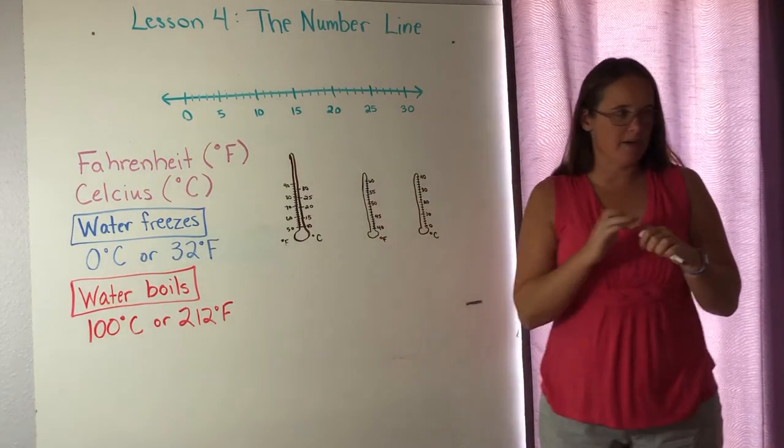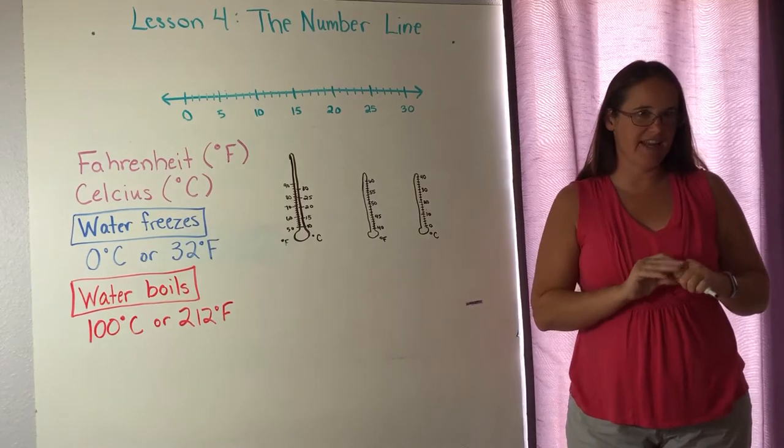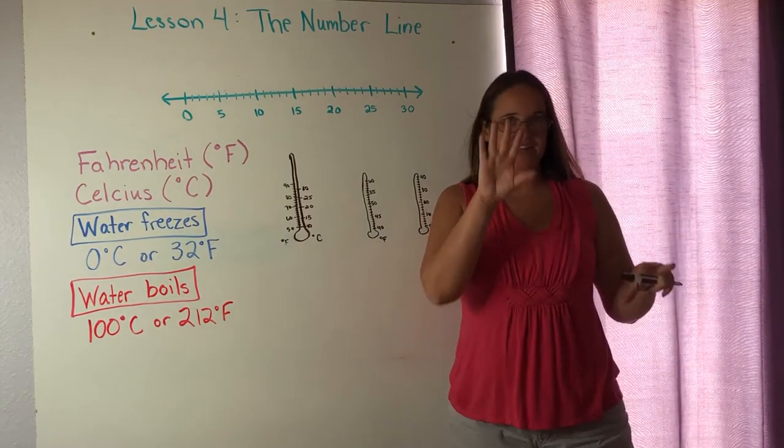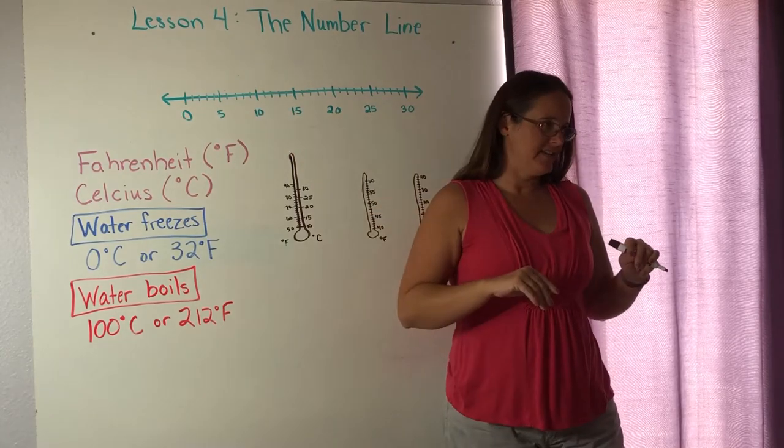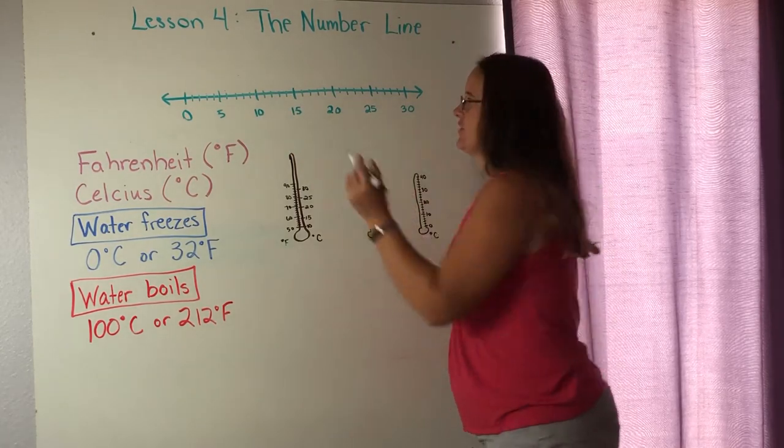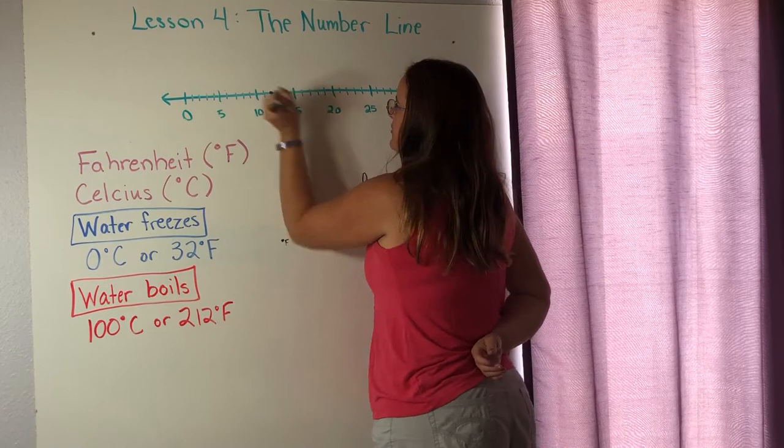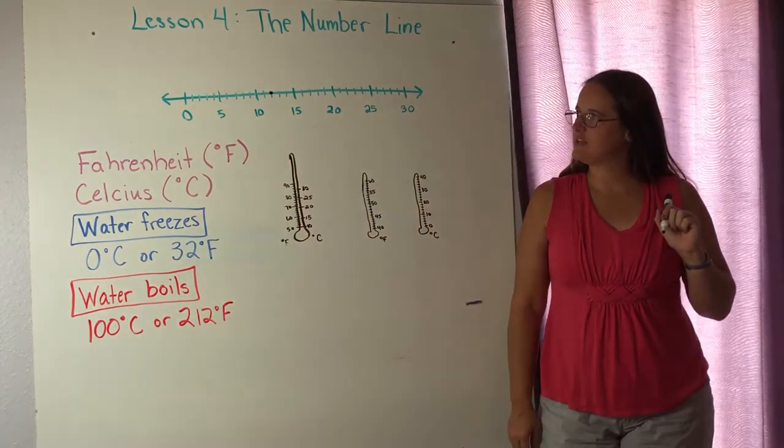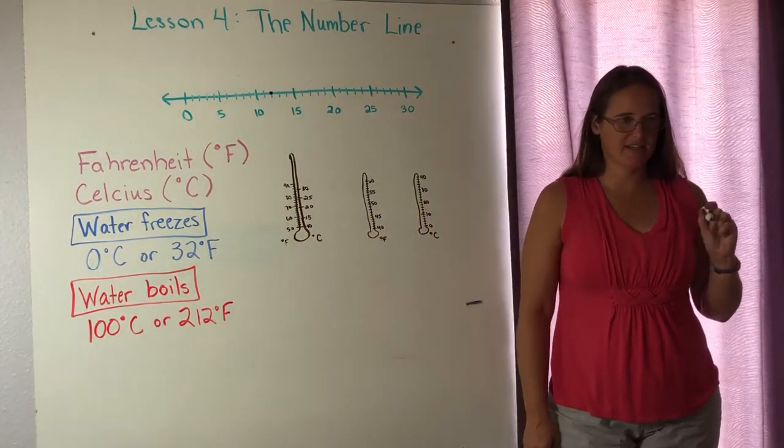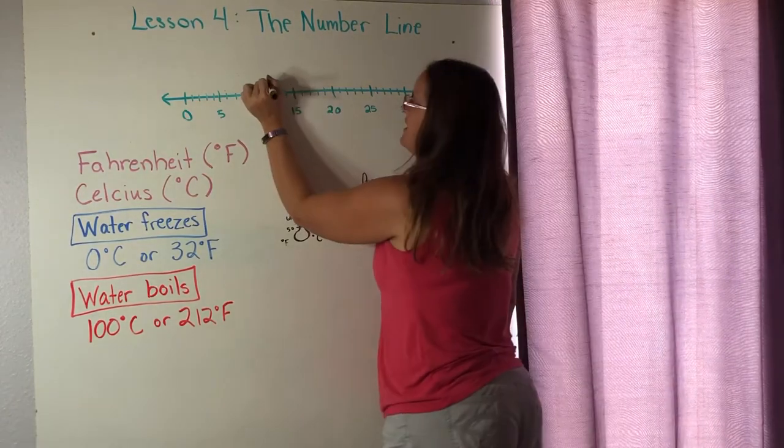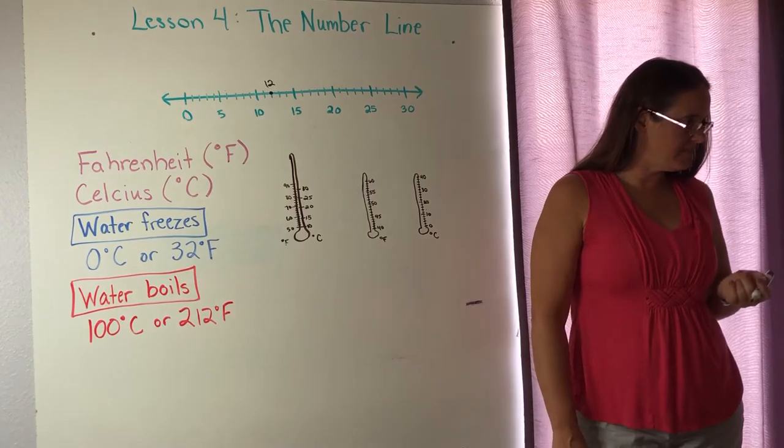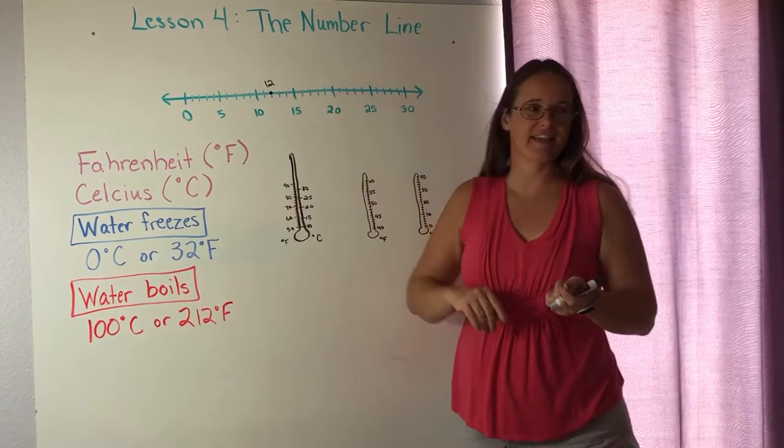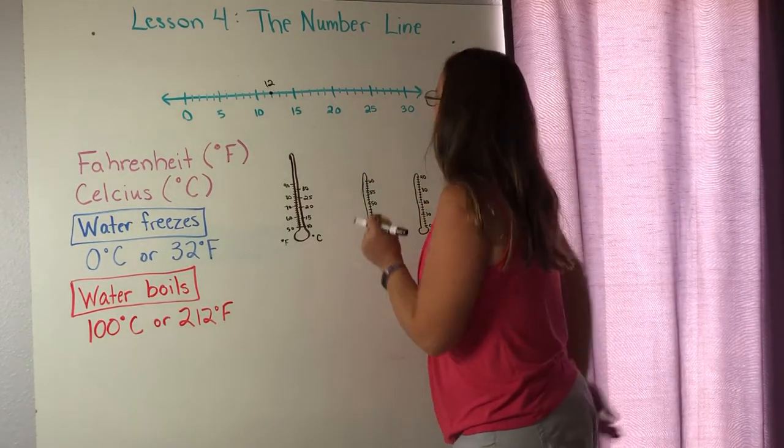And we're just going to use my accurate number line here and we're going to practice. I'm going to put a point up on this number line and I want my boys here and you guys at home to tell me what number does that point represent. So if I put a point right there. Riker, can you tell me what number that is? 12. He said that's 12.